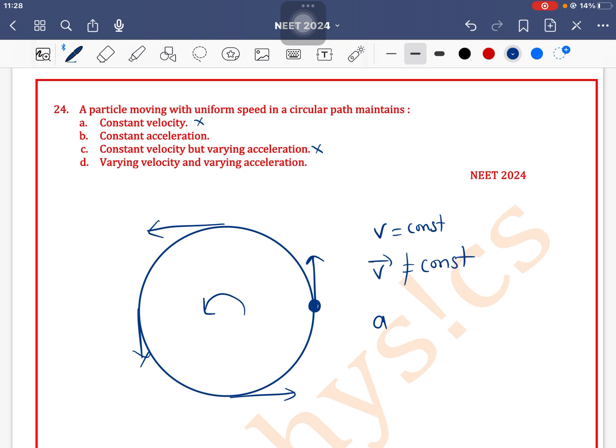It has only one acceleration, that is called centripetal acceleration, which is equal to v squared by r. As v is constant and r is constant, the centripetal acceleration will be constant. So constant acceleration is correct. Varying acceleration is incorrect. So option b is the correct one.